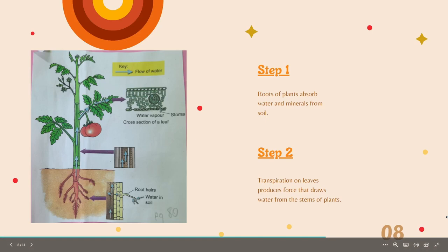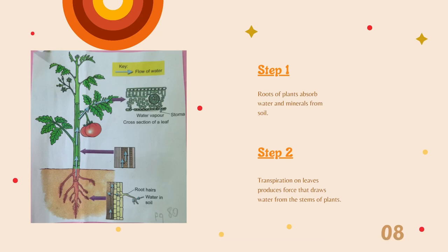This is the diagram of the process called transpiration. This is how it all happens. Step 1: the roots of plants absorb water and minerals from soil. After that, the transpiration process on leaves produces a force that draws water from the stems of plants.